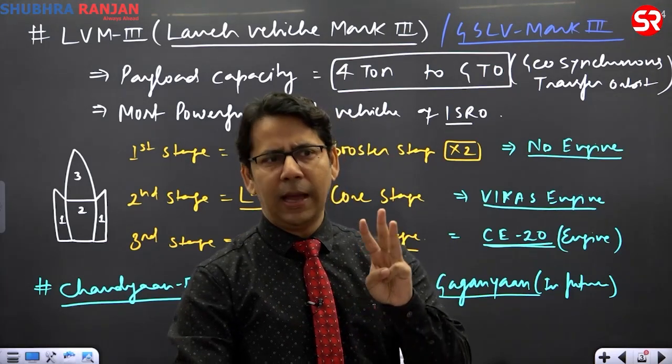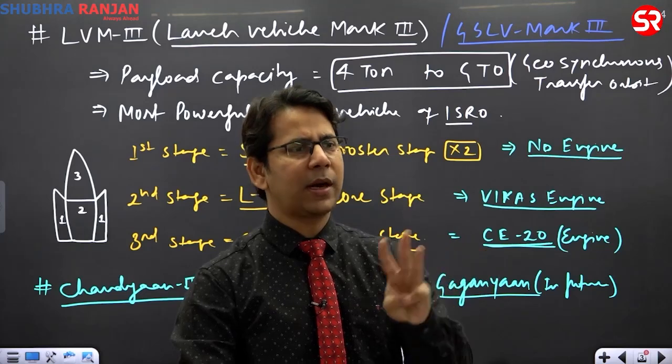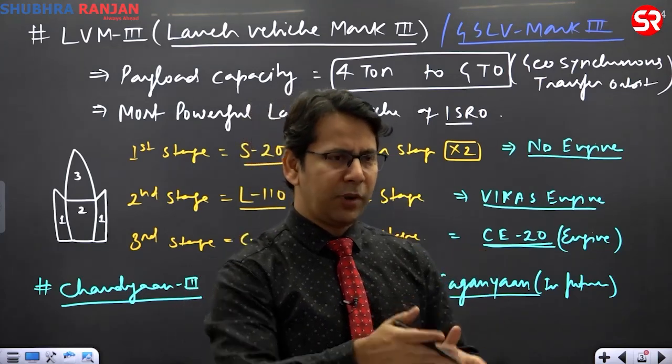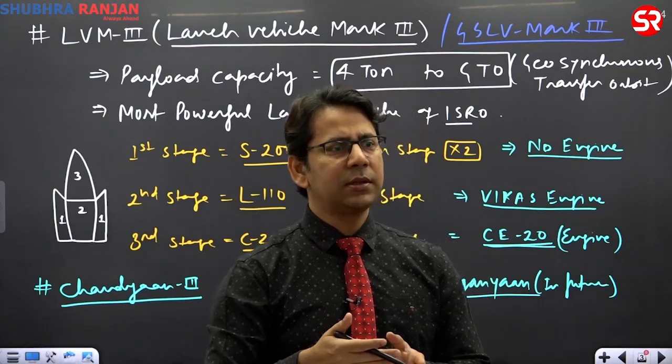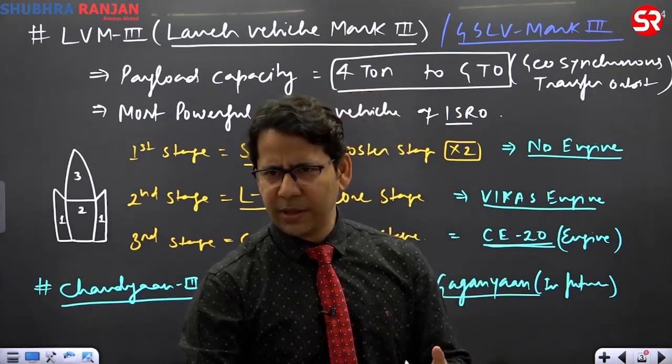GSLV had three variants: Mark 1, Mark 2, and Mark 3. Mark 1 was 1.5 ton, Mark 2 was 2.5 ton, and Mark 3 was 4 ton. Mark 1, we don't need it because we have PSLV. Mark 2 and Mark 3 are there with us.